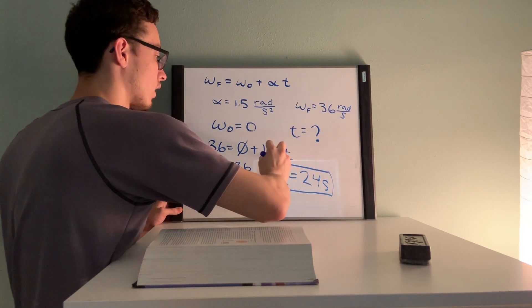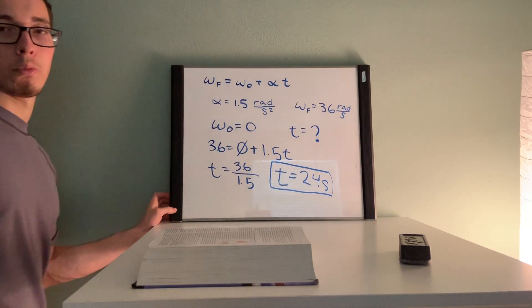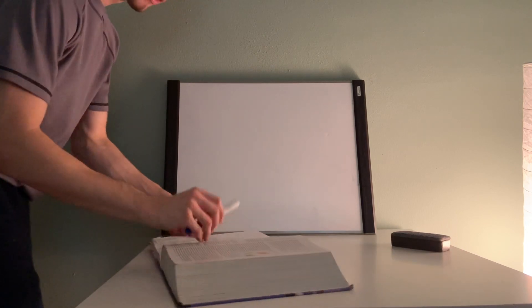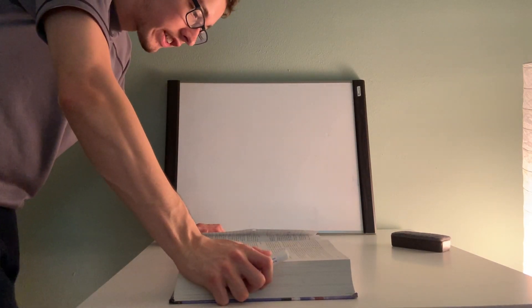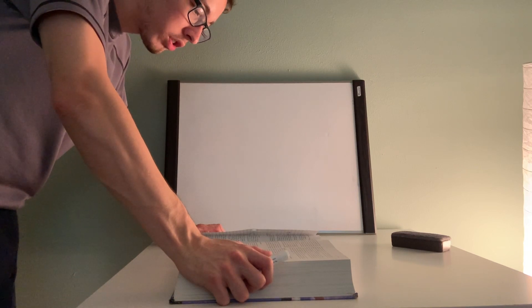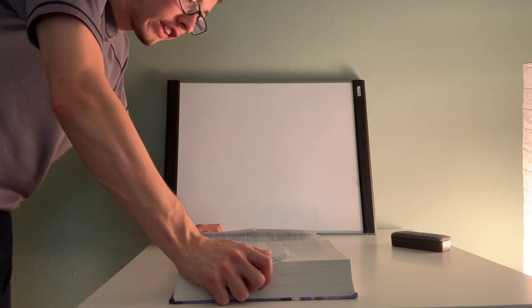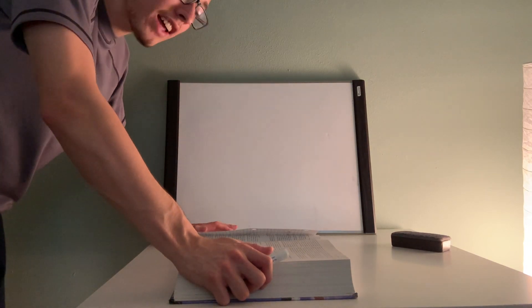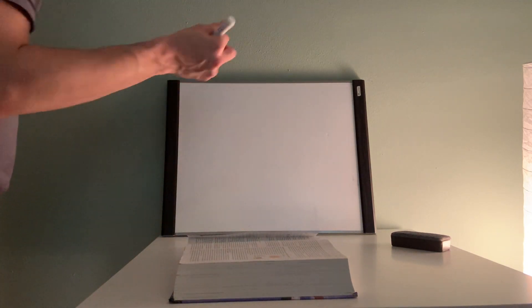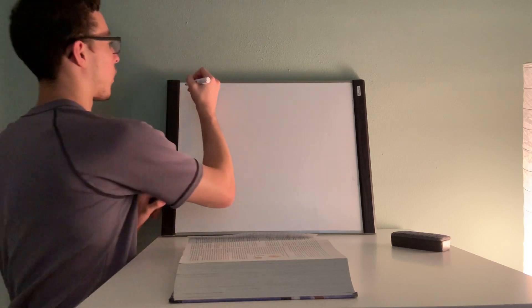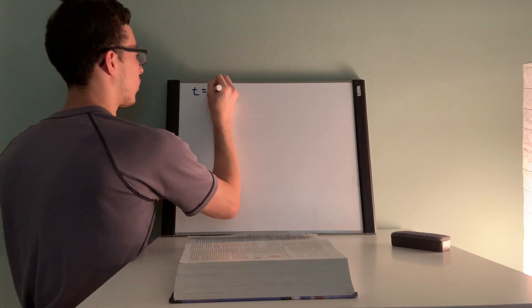I'm going to go ahead and erase this board and I'll be back with part b. All right guys, now that the board is erased, let's get back to part b. So the question says through how many revolutions does the blade turn in this time interval? So in the last problem part a we solved for that time interval to be 24 seconds, so I'm going to go ahead and write that down.